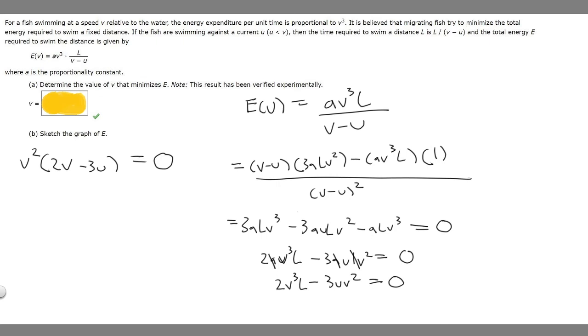Now what we can do is just divide both sides by v². That's just going to become zero, so we'll just have 2v - 3u = 0. We're trying to find what v equals, so we'll add 3u to both sides. We'll get 2v = 3u, and then we divide by 2.